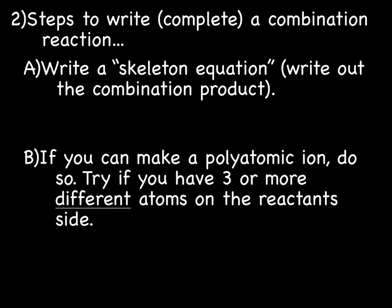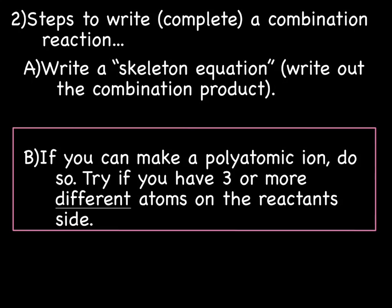So let's go over the steps to write or complete a combination or synthesis reaction. First thing you do is write a skeleton product. So you take all of the atoms, shove them together. Don't worry about balancing or anything, just put the atoms together. An important point, however, this is a little tricky. If you can make a polyatomic ion, do so. So you're going to try if you have three or more different atoms on the reactant side.